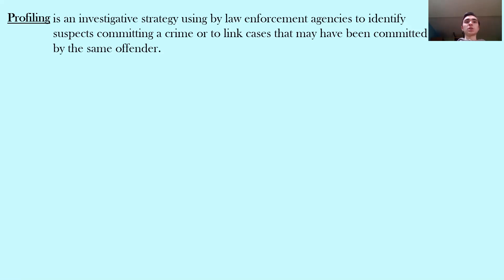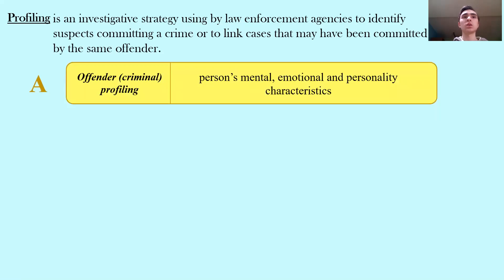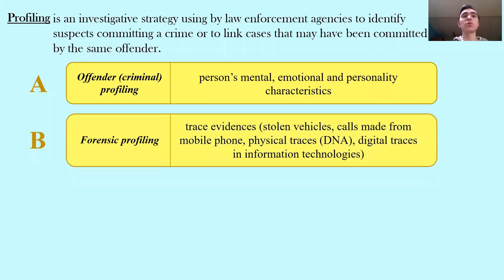The first type of profiling is offender or criminal profiling, that uses a person's mental, emotional, and personality characteristics which are based on things done or left at the crime scene.